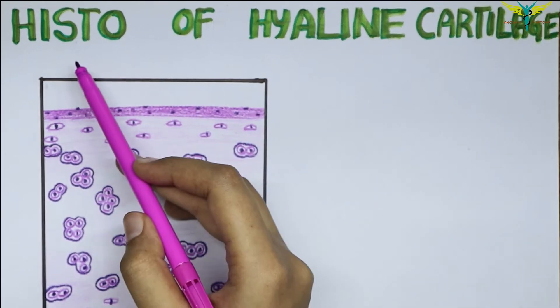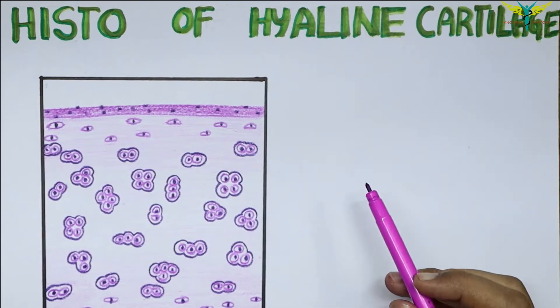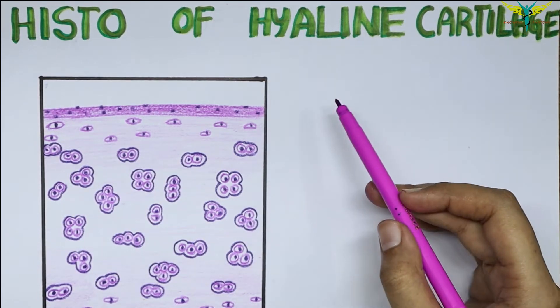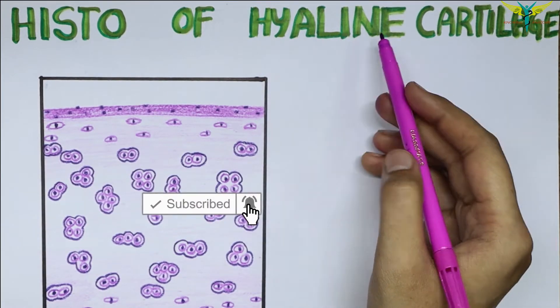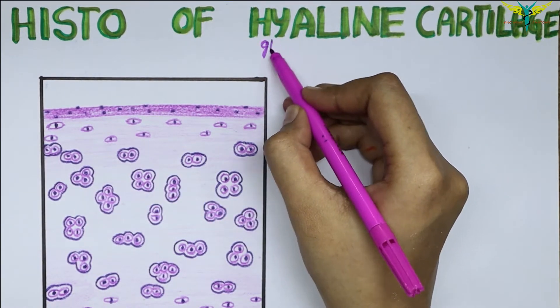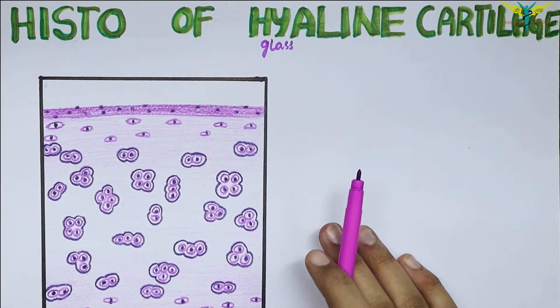In this video, let's learn about the histology of the hyaline cartilage. The hyaline cartilage is so called because of its transparent appearance and the hyalose meaning glass. That means it's glass-like. Its intracellular substance has many collagen fibers in its matrix.